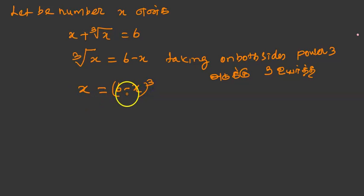so x equal to 6 minus x cube. Okay, a minus b, so a minus b cube: a cube minus b cube plus 3